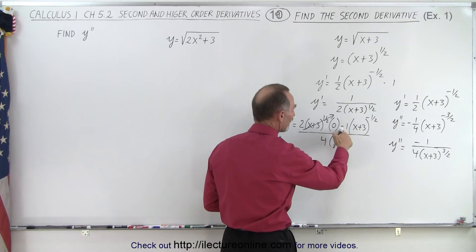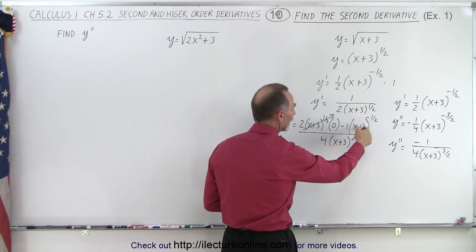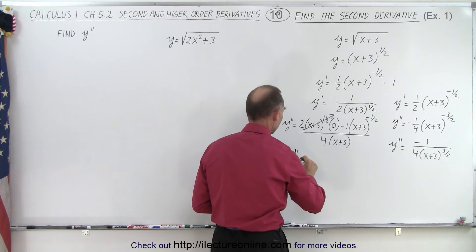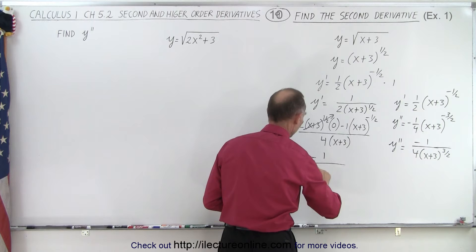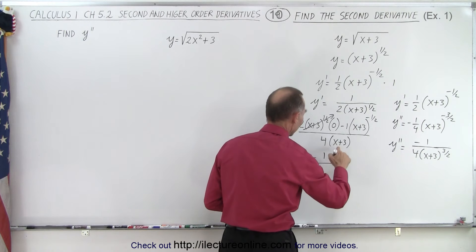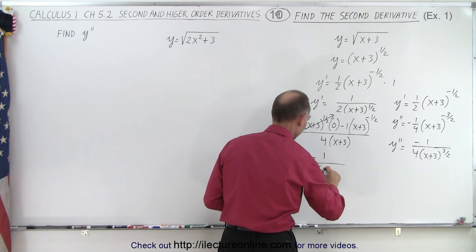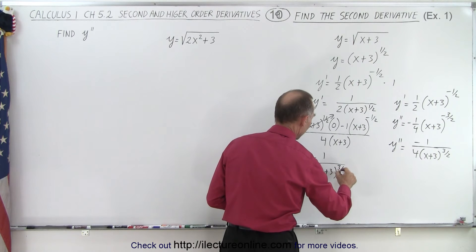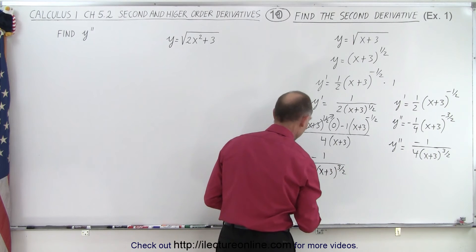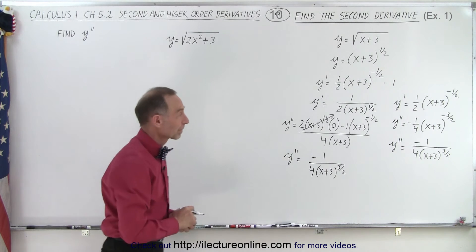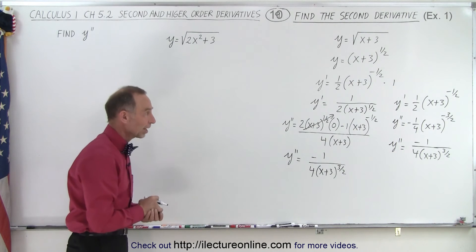The first term goes to 0 because it's multiplied by 0. We end up with minus 1, and that goes to the denominator, so we get y prime equal to minus 1 divided by 4 times x plus 3 times x plus 3 to the 1 half, which is x plus 3 to the 3 halves power. And notice we end up with exactly the same answer, as it should be — a good way to check.